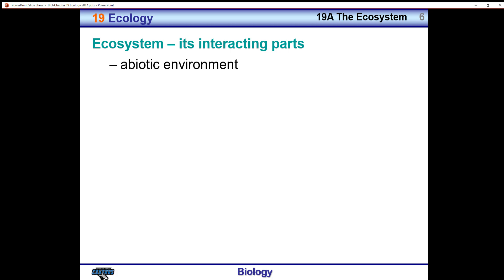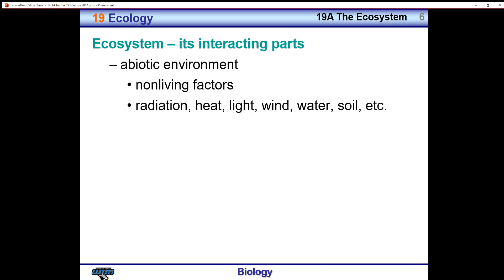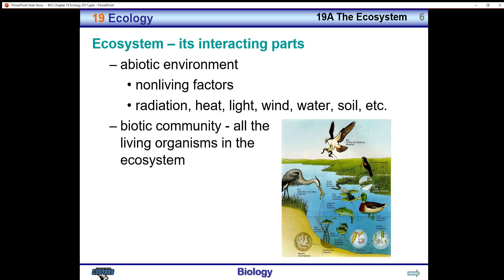The abiotic environment is made up of non-living factors such as radiation, heat, light, wind, water, and soil. The biotic community includes all the living things in the ecosystem. So the ecosystem is made up of two parts: the abiotic and the biotic.